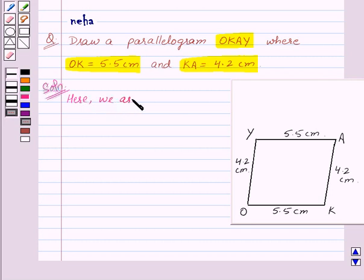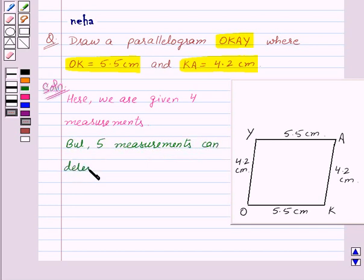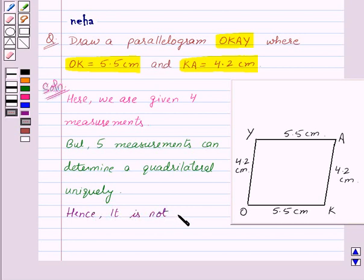Here, we are given 4 measurements. But 5 measurements can determine a quadrilateral uniquely. Hence, it is not possible to draw this parallelogram uniquely.